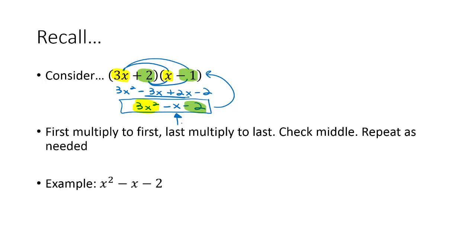The trick would be to check the middle term to get it to work out exactly as we need it. So there's going to be some guess and check involved in this. But here's an example, x² - x - 2. We know the x² comes from the first term times the first term. x² I would guess is x times x.